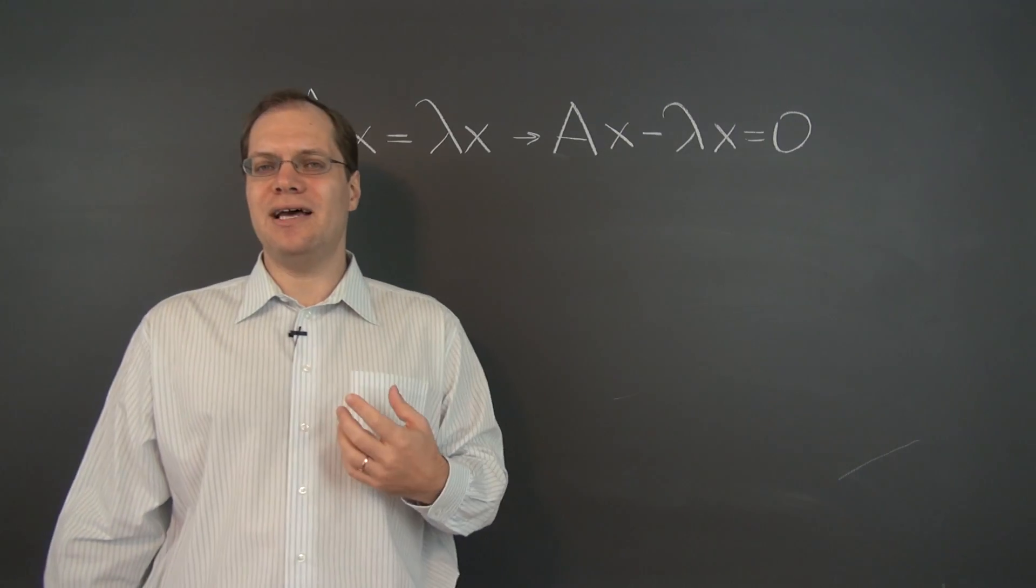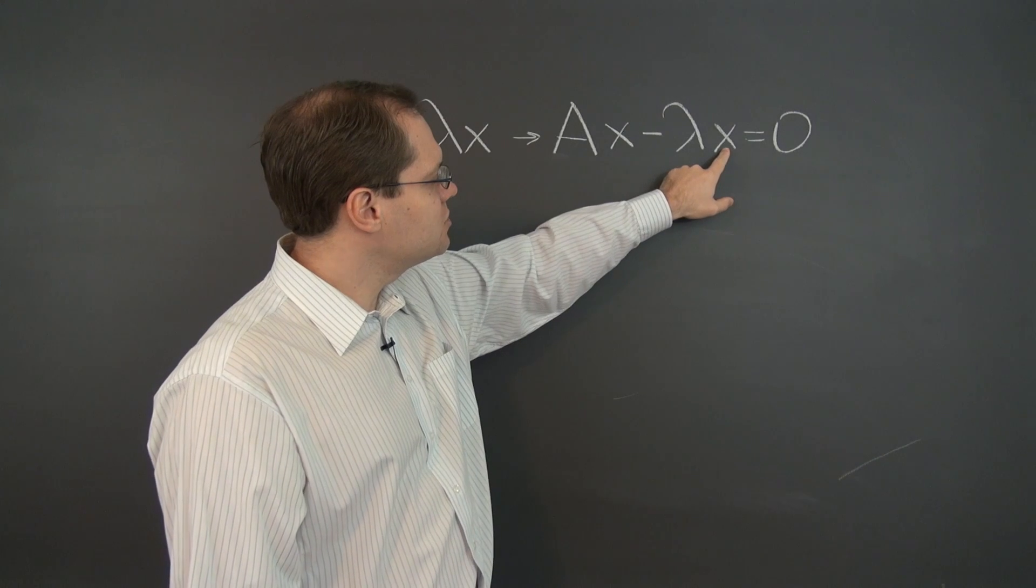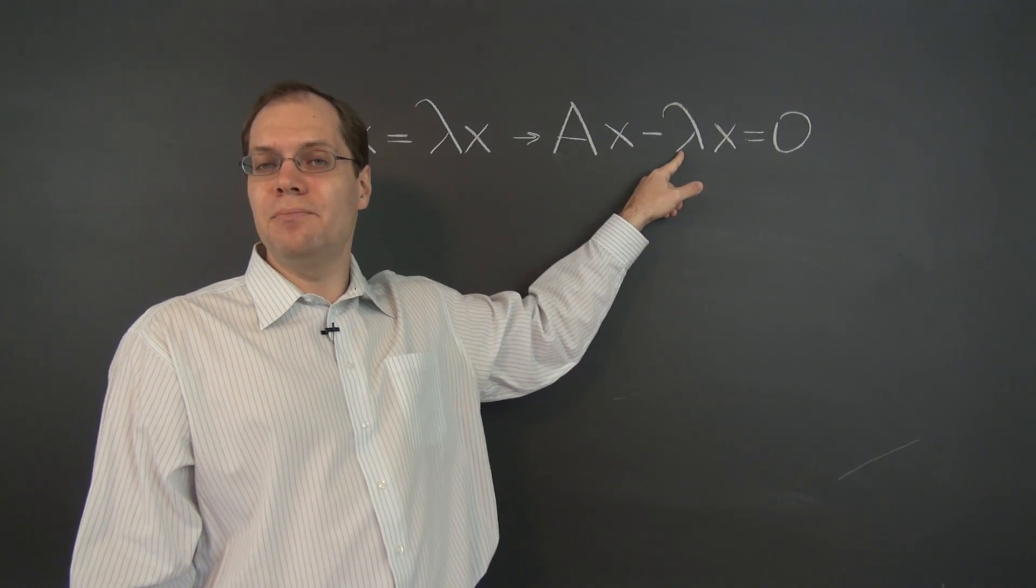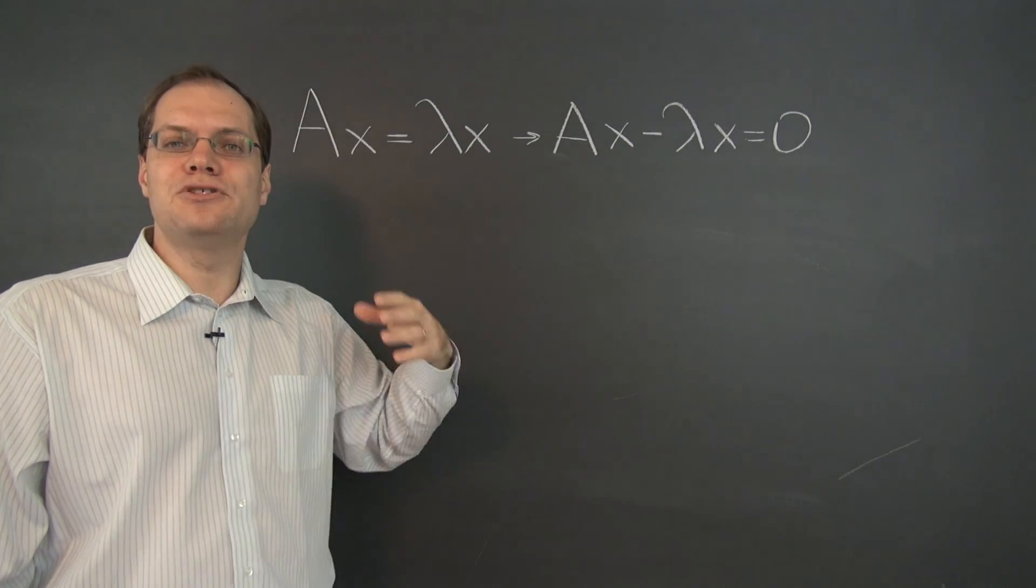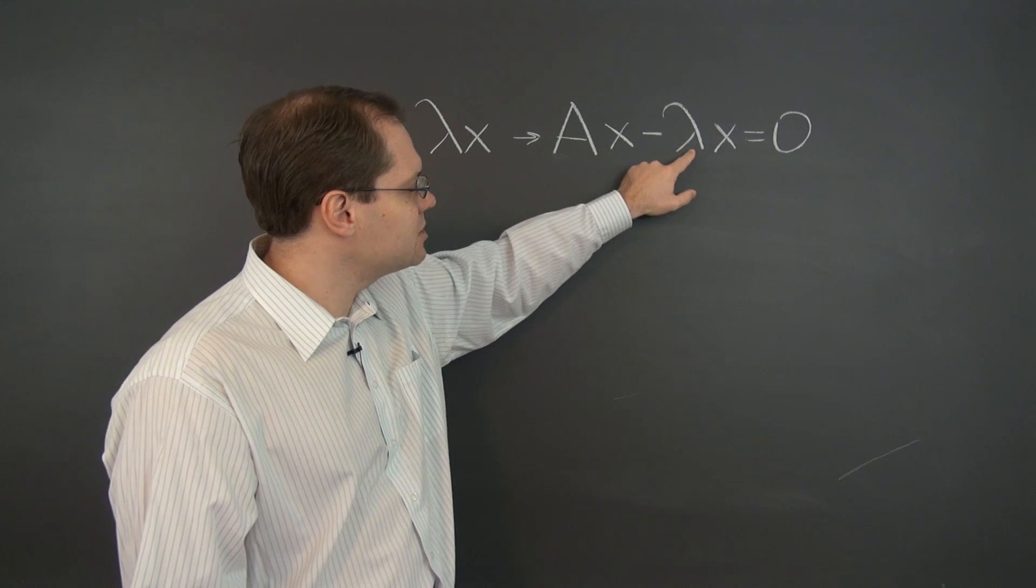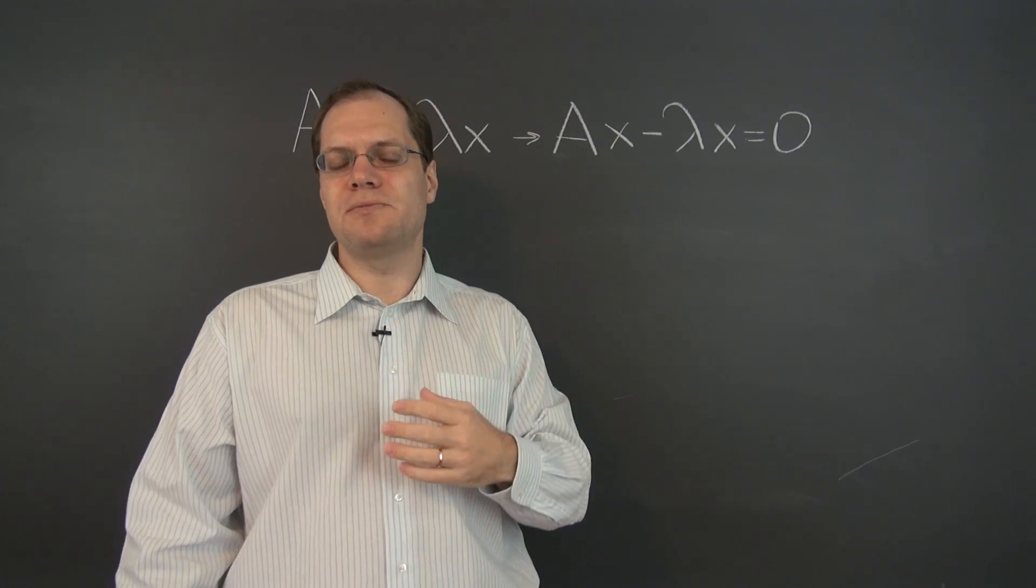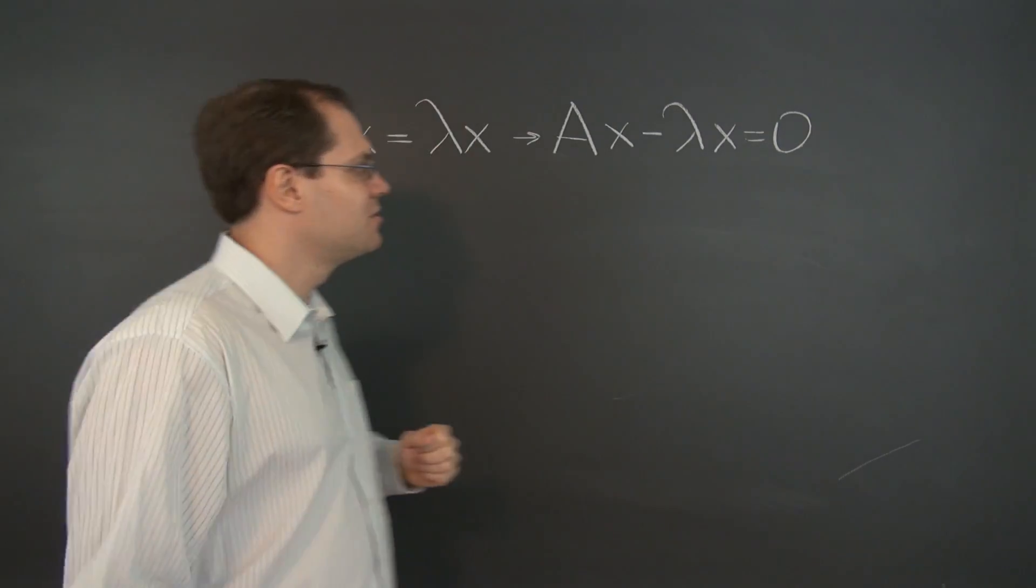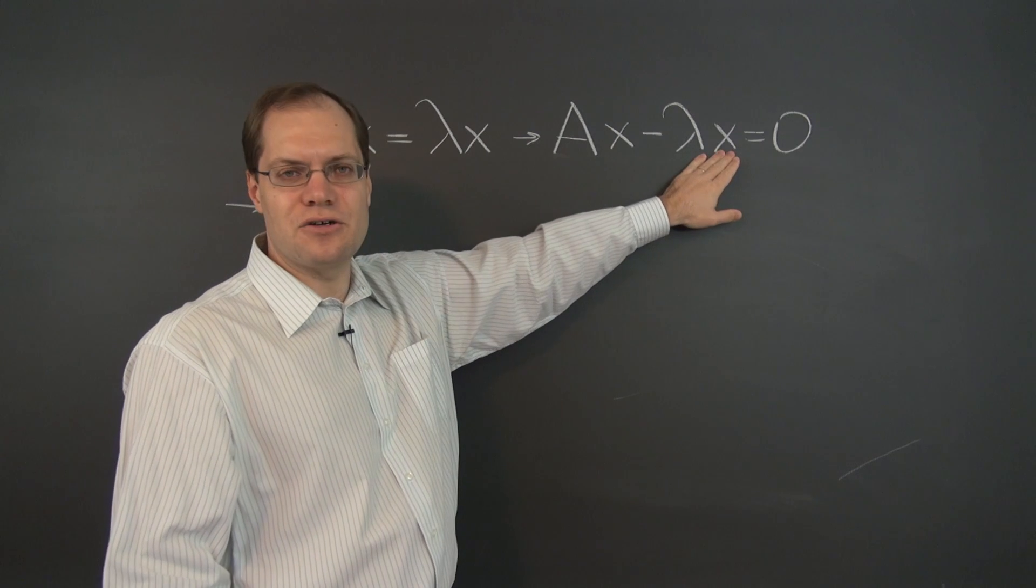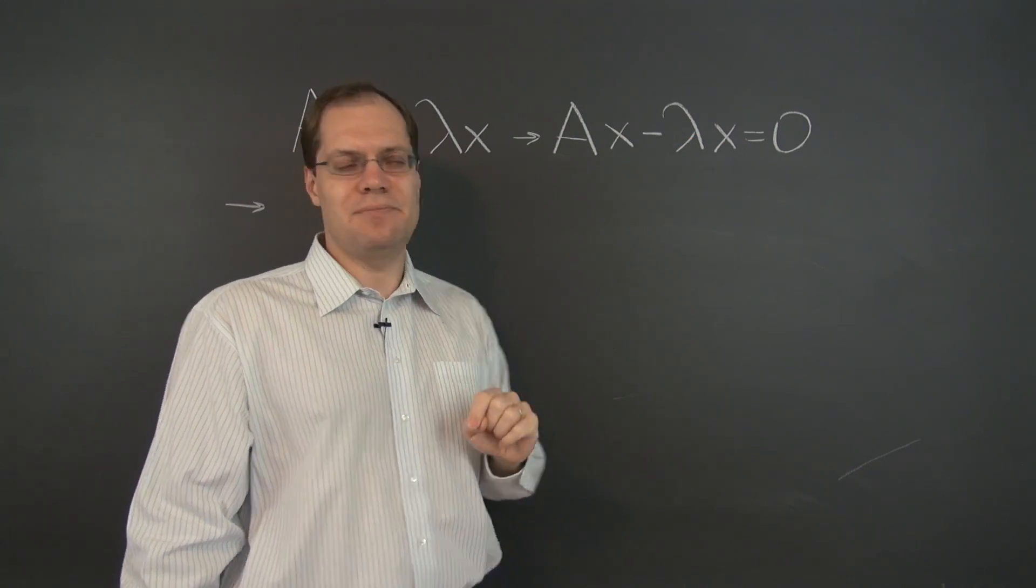What was our next step? To factor out x. And we can almost do it here, except not quite, because if we were to factor out x, we'll have A minus λ, which makes no sense - to subtract a number from a matrix. So the language of matrices fails us at this point. What we have here is a matrix times a vector minus a number times a vector. So when we factor out the vector, we're left with that nonsensical matrix minus number. But we can rescue what's going on.